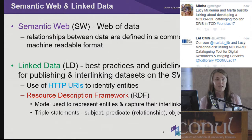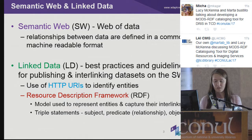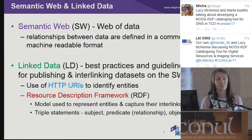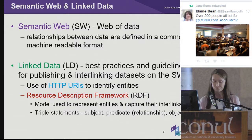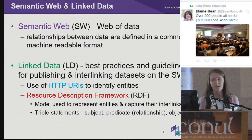RDF takes the form of a triple, consisting of a subject, predicate, and object. It requires the use of URIs to identify the subjects and predicates — that is, the relationship between the subject and the object. The resulting data allows for both human and computer-based agents to crawl, explore, and discover things on the semantic web.